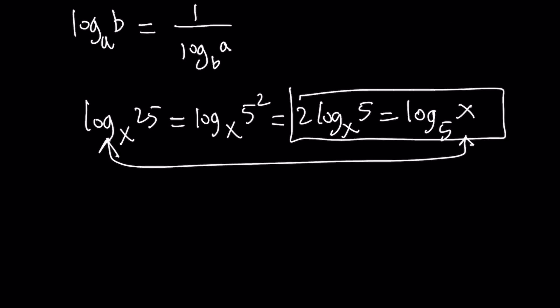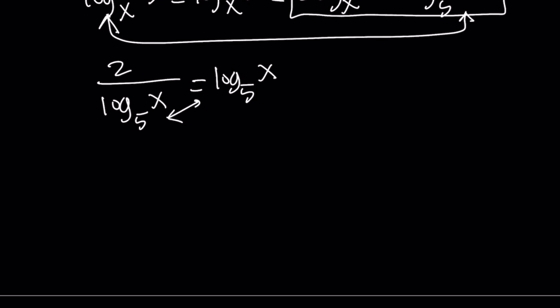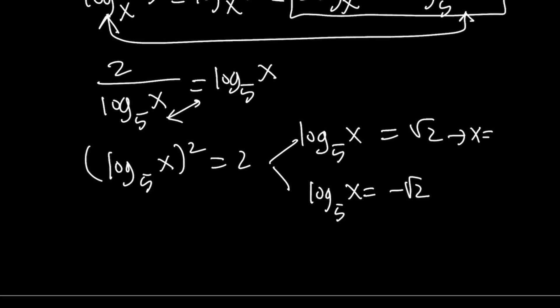Which one should we flip? I want to flip the first one. So let's write it as 2 over log x with base 5, and that is equal to log x with base 5. Now we can go ahead and cross multiply here, and that's going to give us a perfect square. Log x with base 5 squared equals 2. And this is going to give us two results: log x is root 2 or log x is negative root 2. And as before, we have the base 5, so we're going to use it as a base. And from here, x is going to be 5 to the power root 2 or 5 to the power negative root 2.